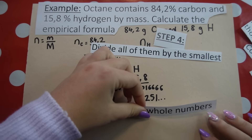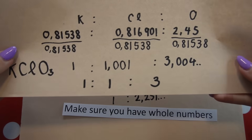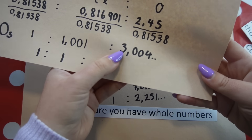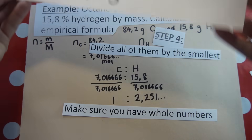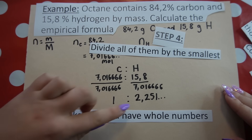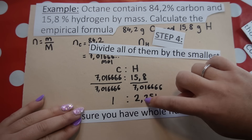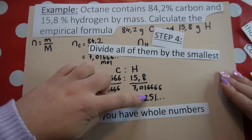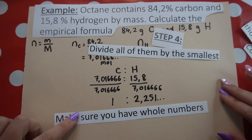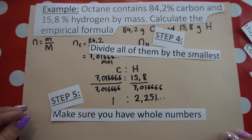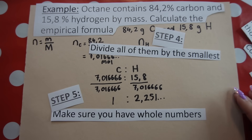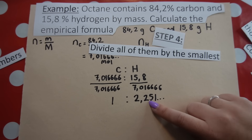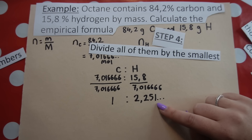Step five: check for whole numbers. In example one, dividing by the smallest gave values like 1.001 and 3.004 — essentially whole numbers. Here we have 1 and 2.25, but 2.25 is too far from 2 to round. It's two and a quarter — 0.25 is a quarter — so we cannot simply round it.